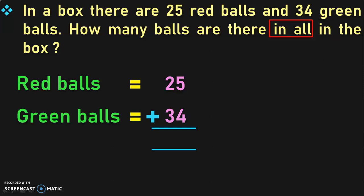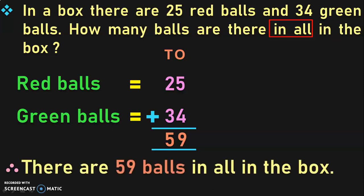To perform addition, it is always a good habit to write down the place values. The place values are 1's and 10's. Begin the addition from the 1's place: 5 plus 4 is 9, then move on to the 10's place: 2 plus 3 is 5. We have found out the total number of balls. Therefore, there are 59 balls in all in the box.